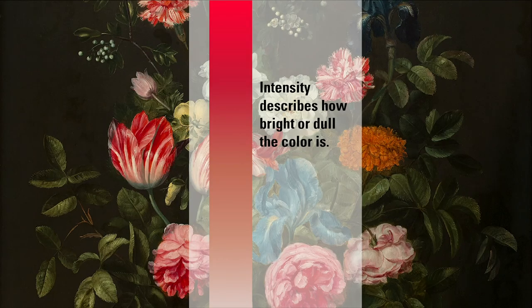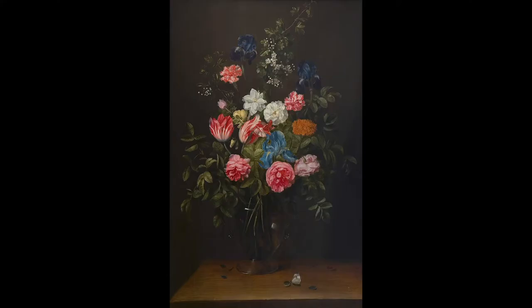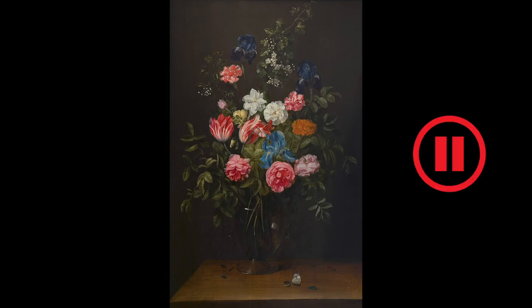Our final characteristic is intensity, which is how dull or bright a color is. Did the artist choose a dull or bright background for his painting? Why did he do this? What about the table and the butterfly? Take a minute to change these dull colors to bright ones in your own artwork. Pause now.